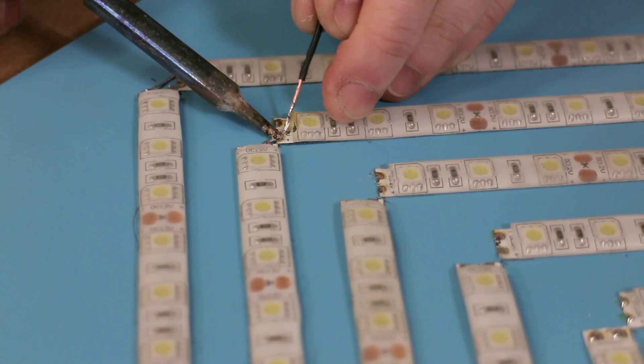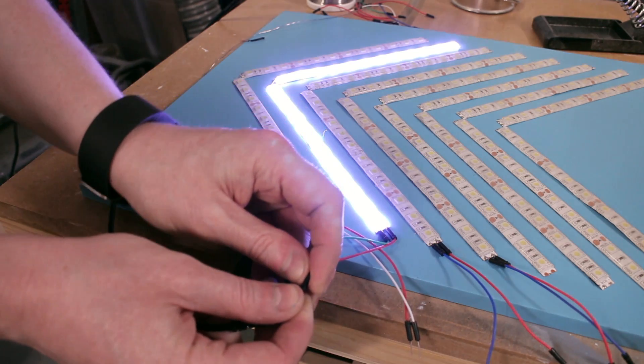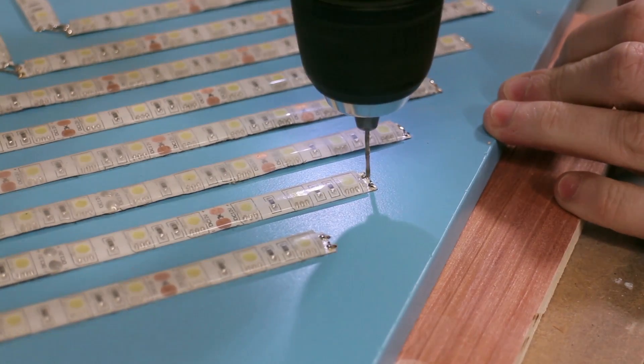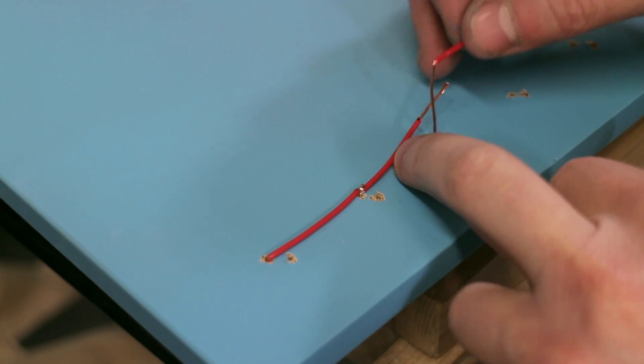The panel was wired up from the back. I drilled a series of holes at the end of each of the LED strips and fed wires directly through from the rear.